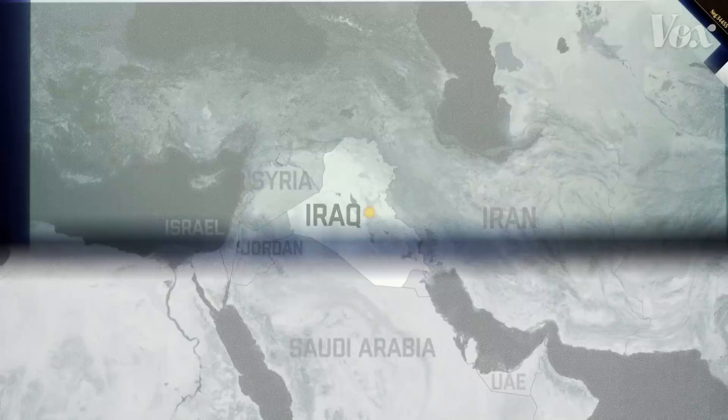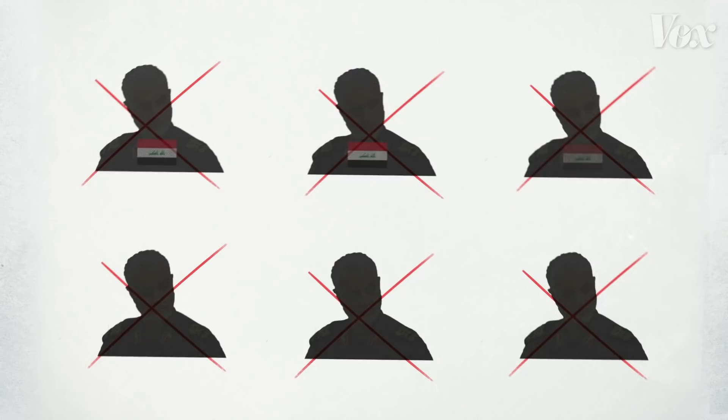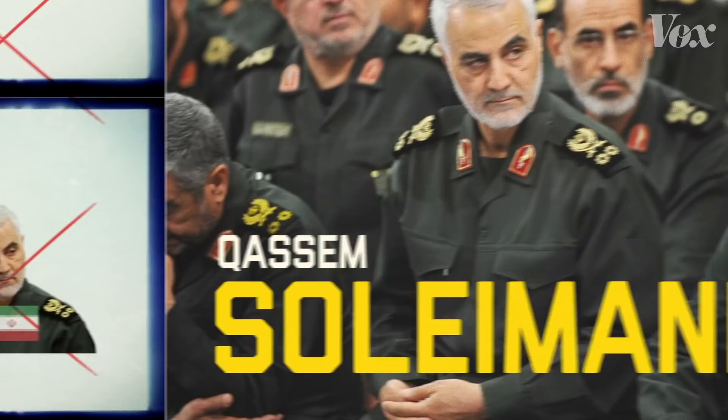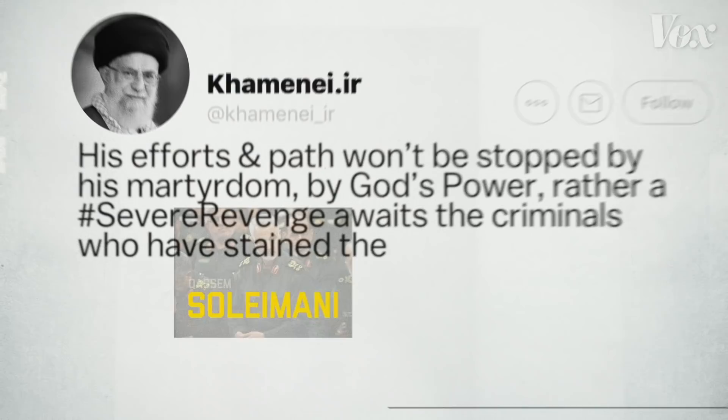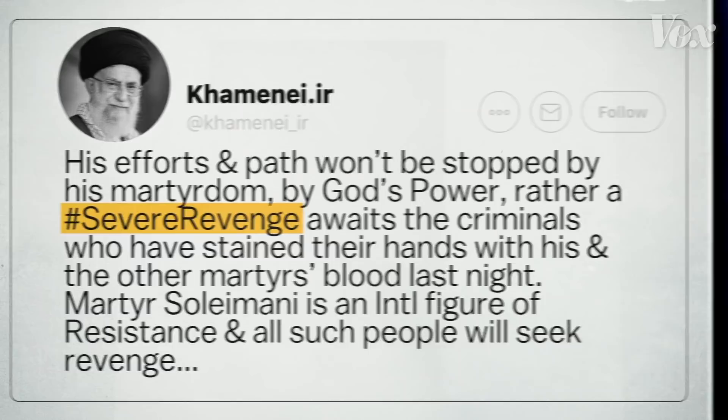On January 3rd, the United States launched a drone strike near the Baghdad International Airport in Iraq. It killed several Iraqi and Iranian military officials, including Iran's top commander named Qasem Soleimani. Moments later, Iran's supreme leader declared Soleimani a martyr and threatened severe revenge against the U.S.